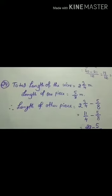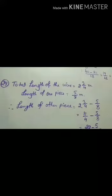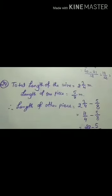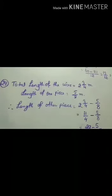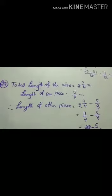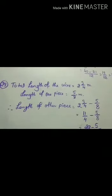And one piece is 5 by 8 meter long. How long is the other piece? So, first of all, total wire means total length of the wire 2 and 3 by 4 meter, already given in your books.